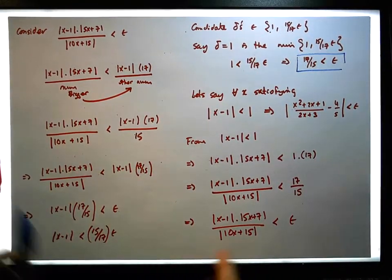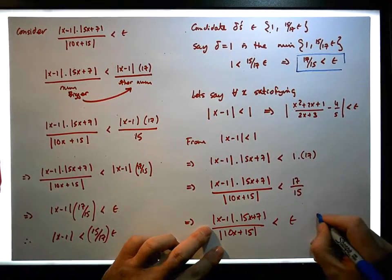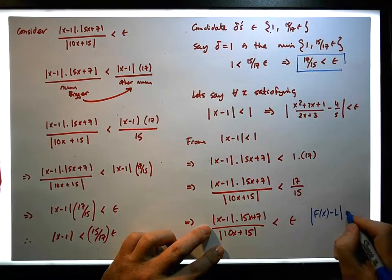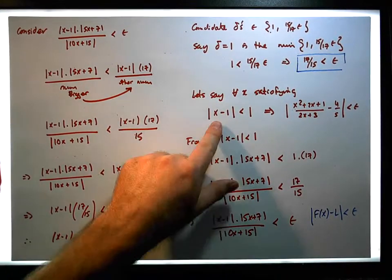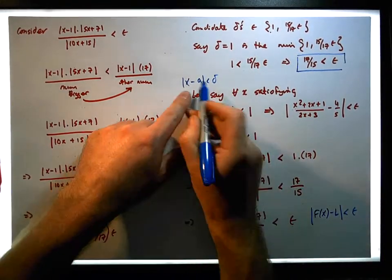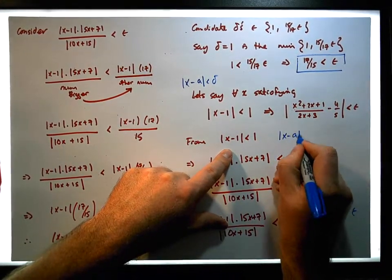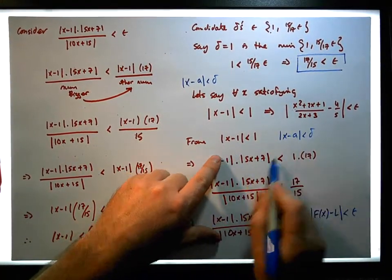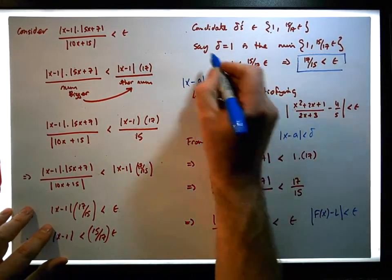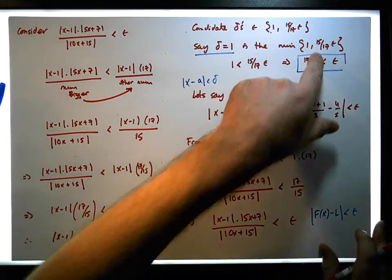But look at this function here — this is f of x minus L. The absolute value of f(x) minus L is less than epsilon. And this here is x minus A is less than delta. So from here, assuming x minus A is less than delta, we've inferred that f of x minus L is less than epsilon. So that works for the case when delta is equal to 1. What about the other case when delta is equal to 15 over 17?